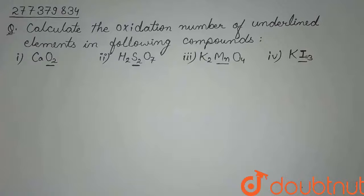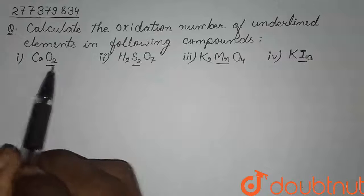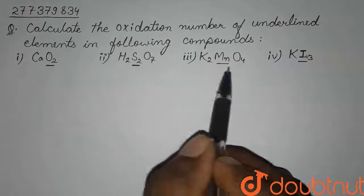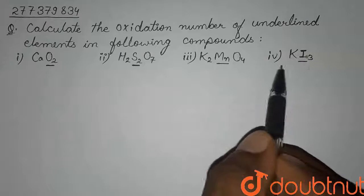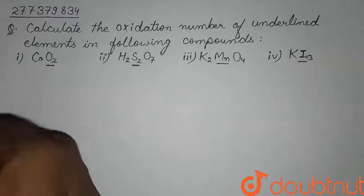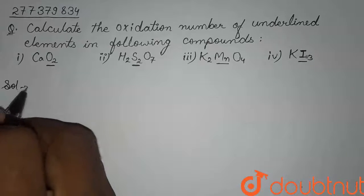Hello, friends. This question asks us to calculate the oxidation number of underlined elements in the following compounds. The first compound is calcium oxide (CaO2), then H2SO7, third is K2MnO4, and the fourth one is KI3. Now we will find them one by one.